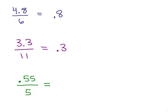And the last one, we've got .55 divided by 5, so we just think, this works as long as it's a whole number in the denominator. 55 divided by 5 is 11, and we're going to move it in two places.